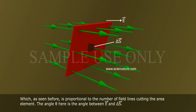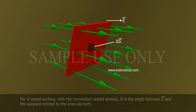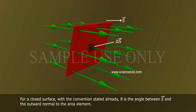The angle theta here is the angle between e bar and delta s bar. For a closed surface with the convention stated already, theta is the angle between e bar and the outward normal to the area element.